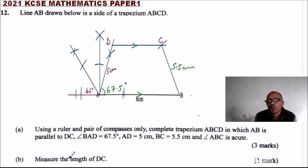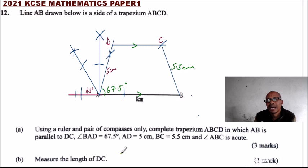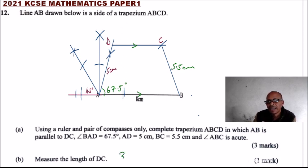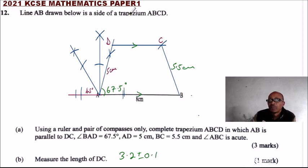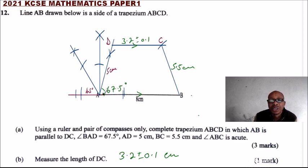Now measure the length of DC. Using your ruler and compass, extend your compass along DC and press it on a ruler to read the measurement. When done correctly, DC measures 3.2 centimeters, plus or minus 0.1 centimeters.